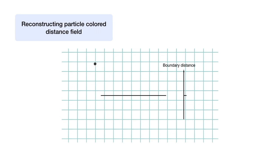For each boundary, the color is gained once the particle approaches it, and will be persistent until the particle moves away. When the particle moves through the boundary, it will maintain the color while the distance will be negative.